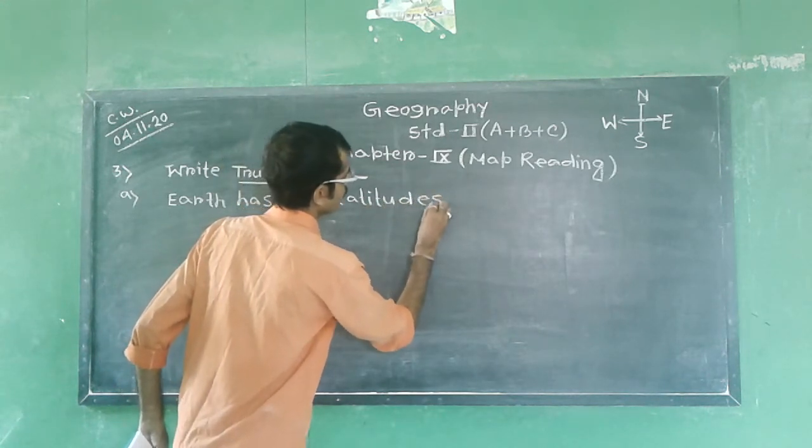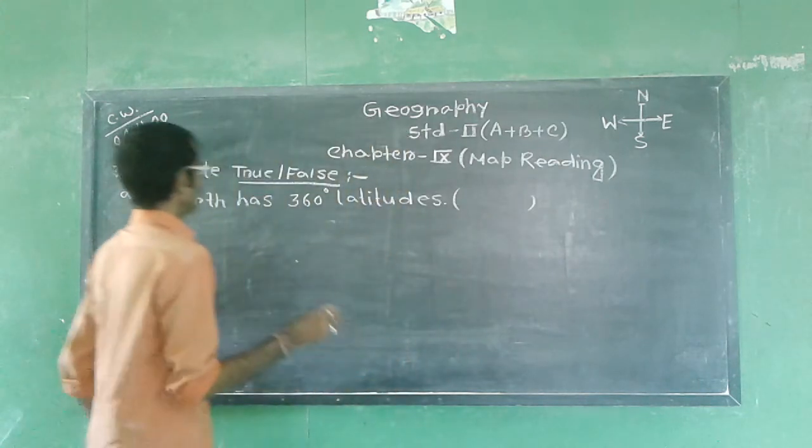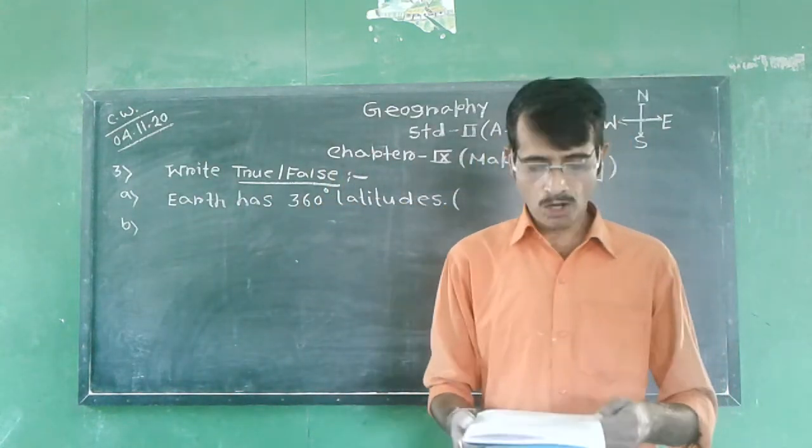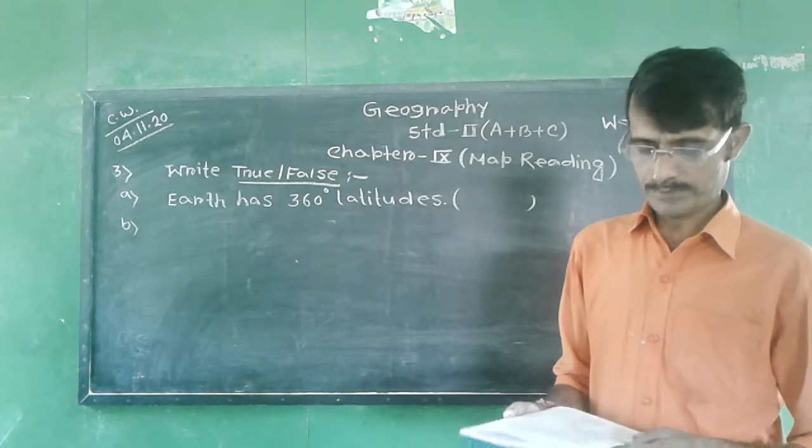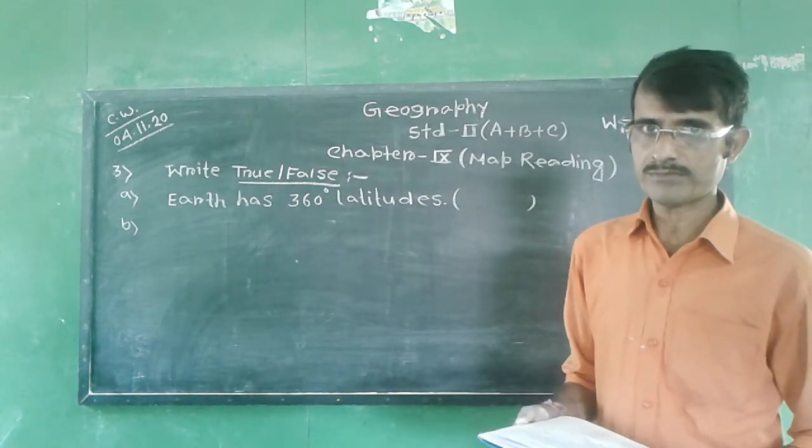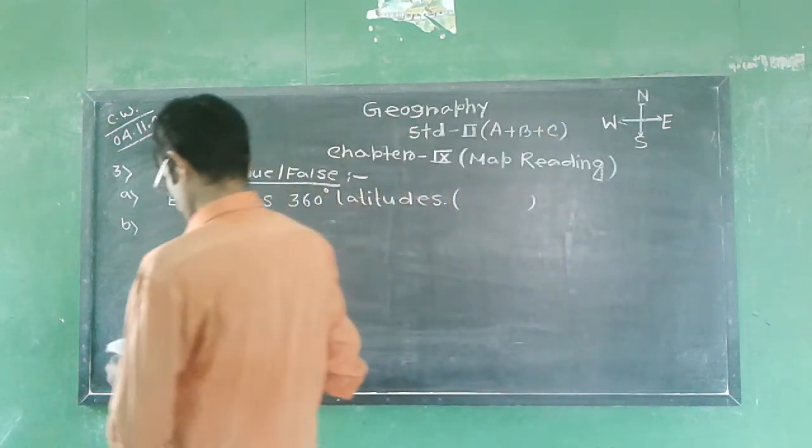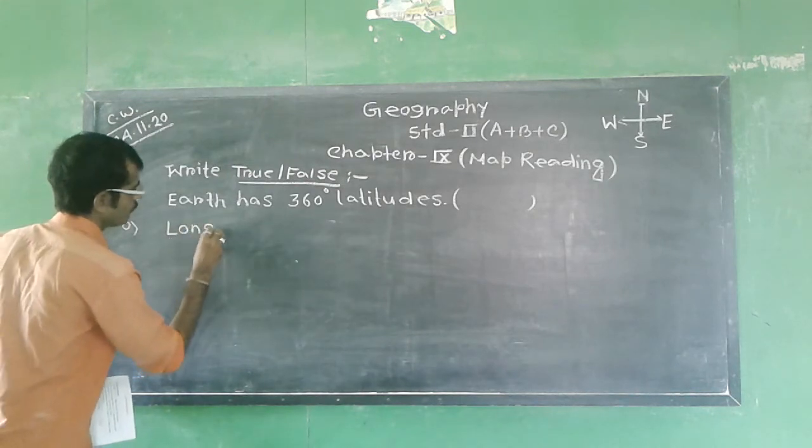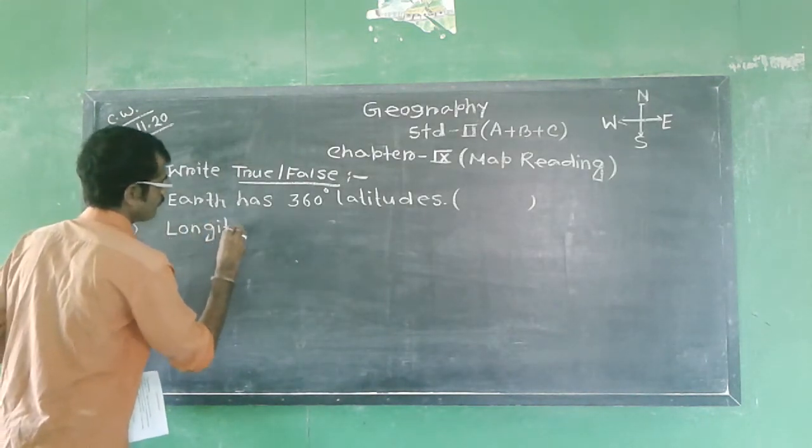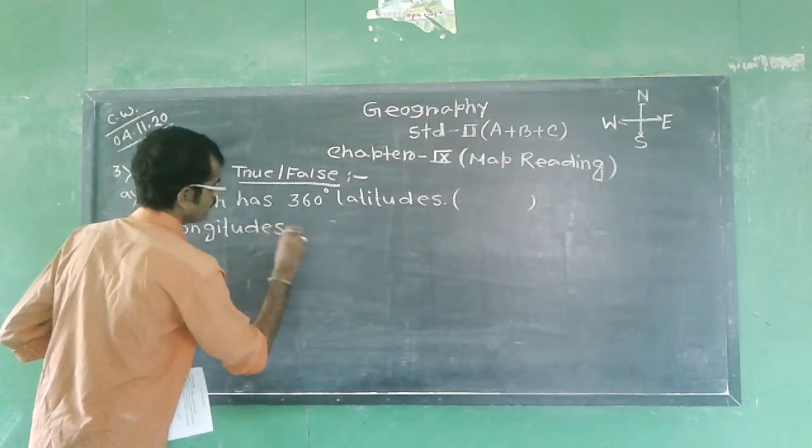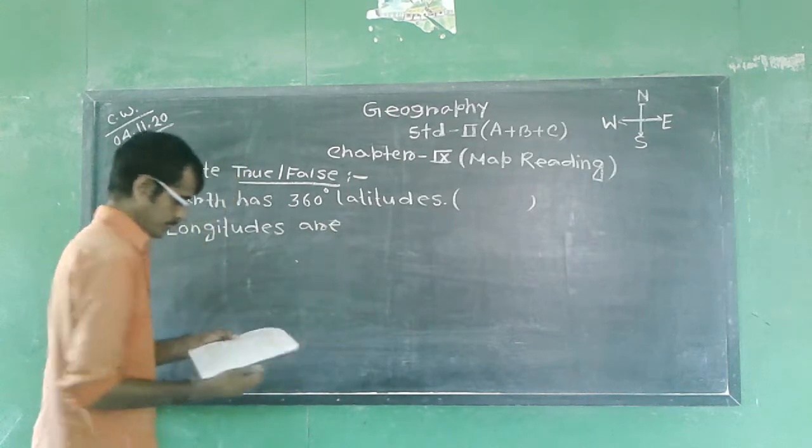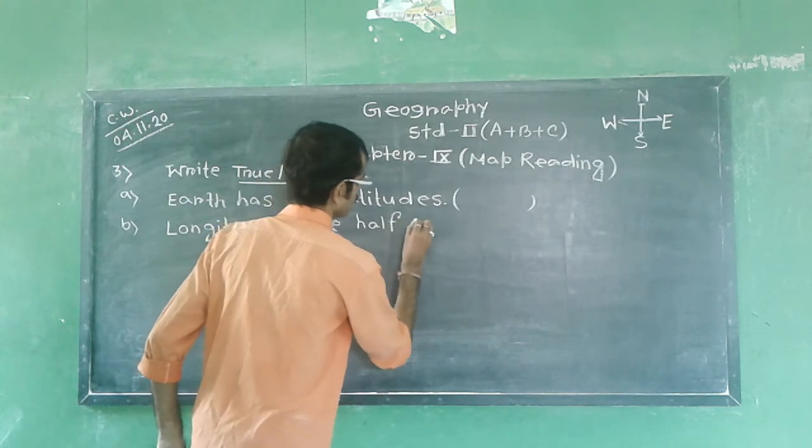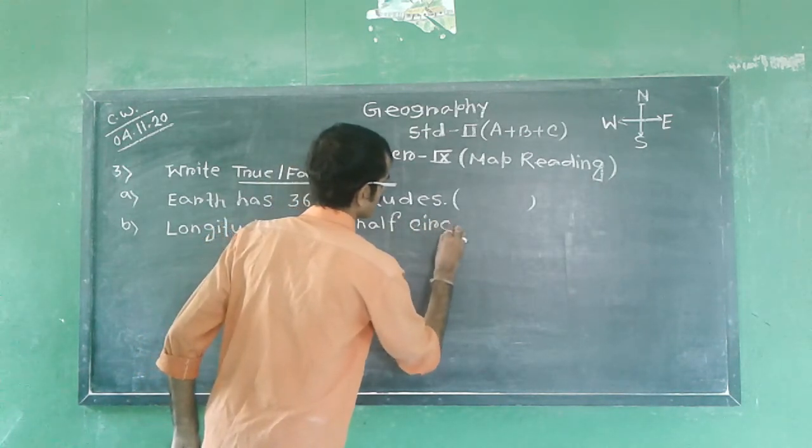B. Longitudes are half circle. Is it the right statement? Yes, it is the right statement.